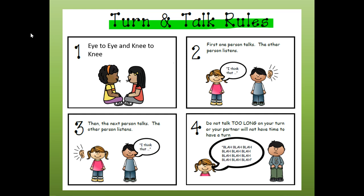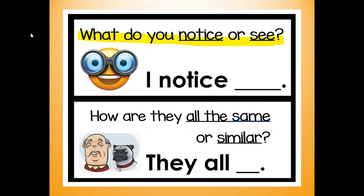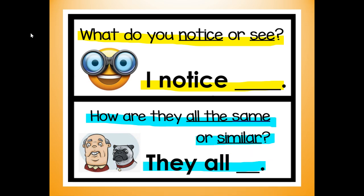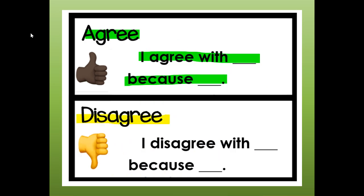If you have a partner at home, here are our turn and talk rules. Number one: eye to eye, knee to knee — you're facing your partner when you're talking to each other. Number two: first one person talks, the other person listens. Three: then the next person talks, the other person listens. But don't talk too long on your turn or your partner will not have time to have a turn. These are the two questions I'm going to ask for each group of pictures: What do you notice or see? — say 'I notice' or 'I see.' And: How are they all the same or similar? — say 'They all.' You may agree and say 'I agree with you, Mrs. Pearson, because,' or you may disagree and say 'I disagree with you because.'